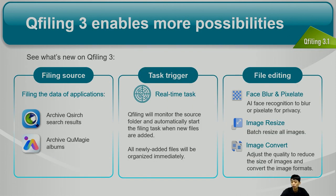Now let's see what's new in QFiling 3. We have integrated with two other QTS applications — QSearch and QMagic — allowing you to archive the search results from QSearch and also archive albums from QMagic. In QFiling 3, we also support a new type of task called real-time task, where QFiling monitors the source folder and automatically starts the filing task when new files are added, so every newly added file will be organized immediately. We also provide three new file editing modules: Face Blur and Pixelate, Image Resize, and Image Convert.